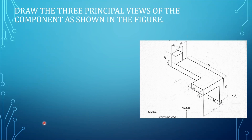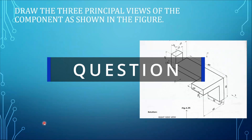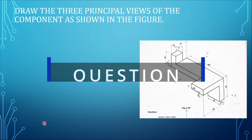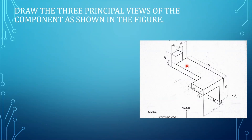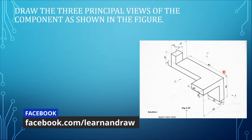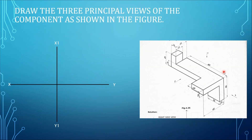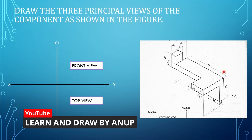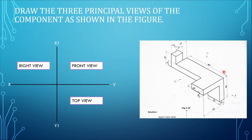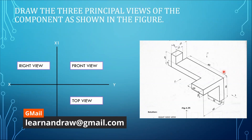Now let's read the question: Draw the three principal views of the component as shown in the figure. You can see this is the machine component. This is our front view, this is the top view, and this is the right view. Since in the figure they have given the right view, we have to draw that on the left profile plane in the first angle projection method.